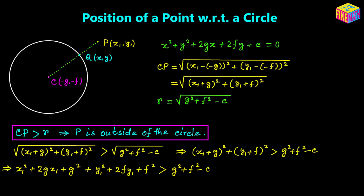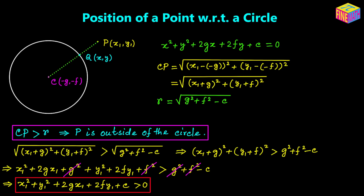We can see that g² and f² appear on both sides and cancel out. So we are left with: x₁² + y₁² + 2gx₁ + 2fy₁ + c > 0. This is the necessary condition for point P to be outside of the circle.